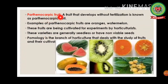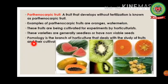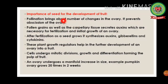A parthenocarpic fruit is a fruit that develops without fertilization. Examples include oranges, watermelon, papaya, and kiwi. These fruits are cultivated by horticulturists and are generally seedless or have non-viable seeds. An important term here is pomology — the branch of horticulture that deals with the study of fruits and their cultivation.